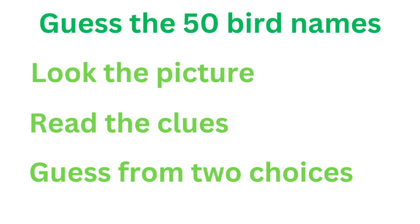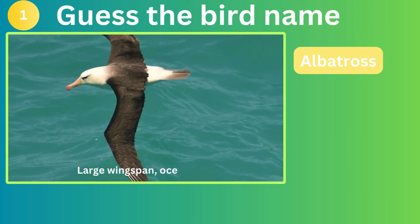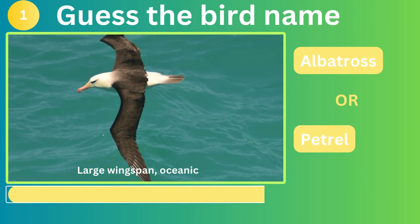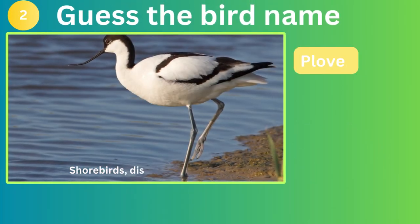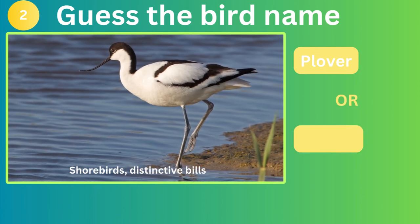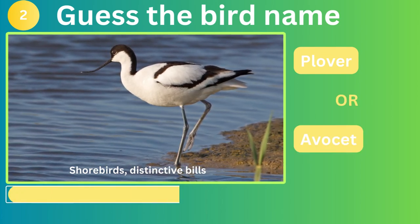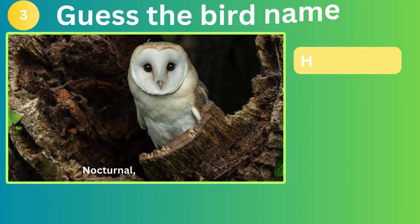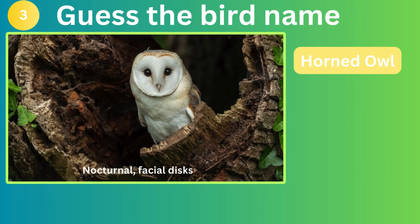Albatross or Petal Albatross? How was it? The correct answer is Horned Wall or Bond Wall.